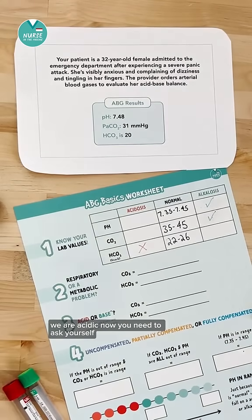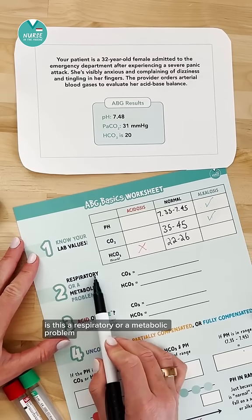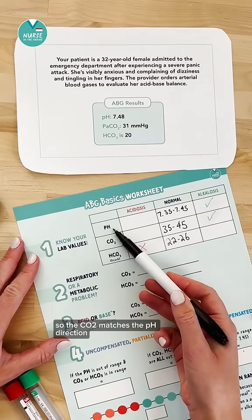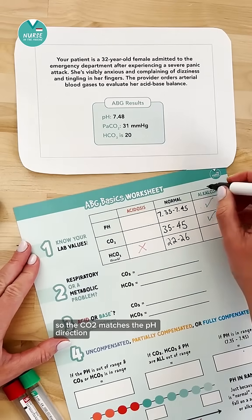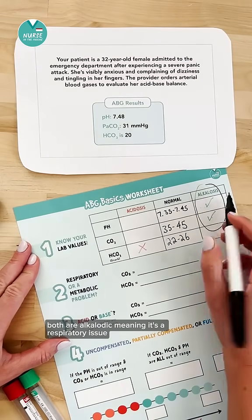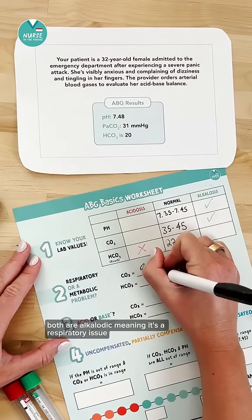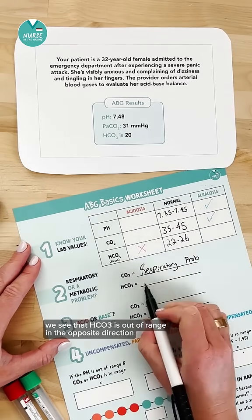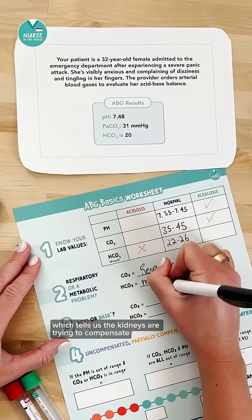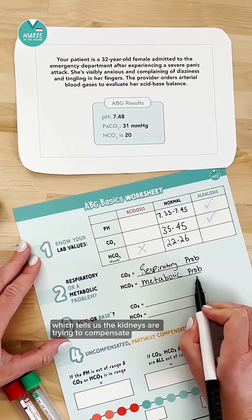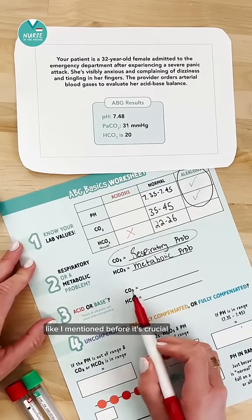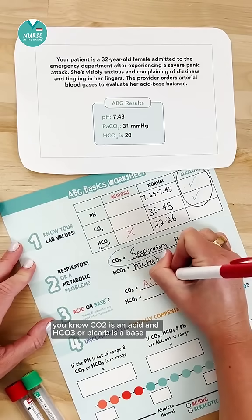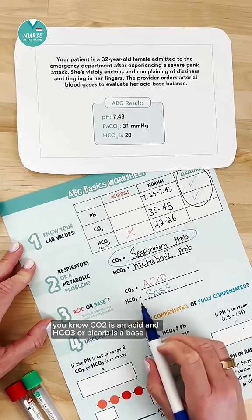Now you need to ask yourself: is this a respiratory or a metabolic problem? The CO2 matches the pH direction — both are alkalotic — meaning it's a respiratory issue. We see that HCO3 is out of range in the opposite direction, which tells us the kidneys are trying to compensate. It's crucial you know CO2 is an acid and HCO3 or bicarb is a base.